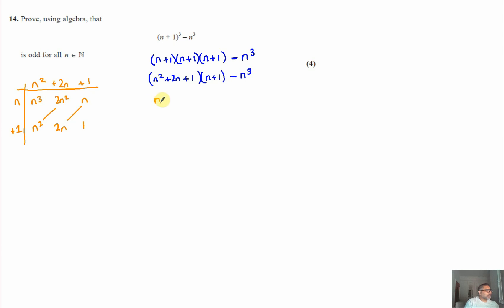So what we're left with then is n³ + 3n² + 3n + 1. And then we also had the minus n³ afterwards. You can see that those two cancel out. So what we're left with then is 3n² + 3n + 1.